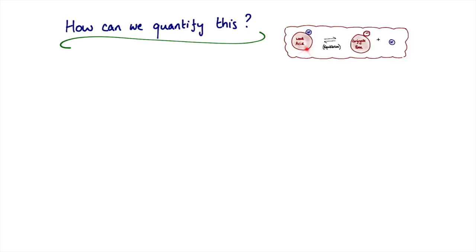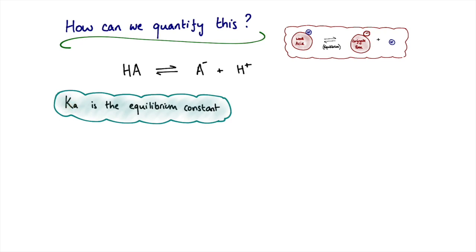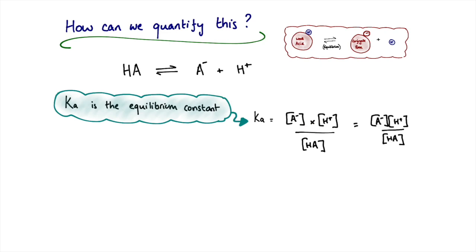Taking the acid example, we write: HA ⇌ A⁻ + H⁺, where HA is the weak acid and A⁻ is the conjugate base. We define an equilibrium constant Ka for this reaction: Ka equals the concentration of the conjugate base times the concentration of H⁺, divided by the concentration of the weak acid. By convention the multiplication sign is omitted, so in textbooks you'll often see it written without it.